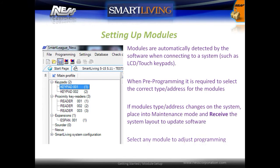Installed hardware modules, such as keypads and expanders, are automatically detected by the software when uploading from a system. When pre-programming is required, it is important to select the correct type and address for the modules. If any module's type or address changes on the system, place the system in maintenance mode and then receive the system layout to update the software. Once modules are added to your solution, you can then select them to adjust programming.